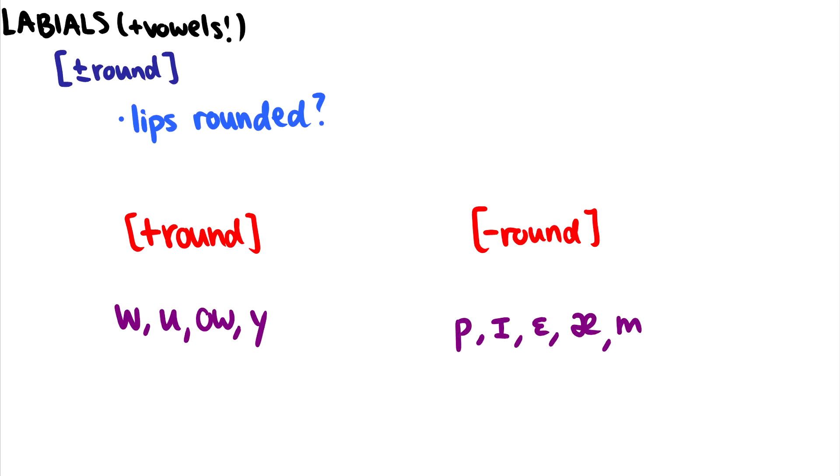Now, if we have labial sounds, then we can talk about plus and minus round. And this also applies to vowels, because we use our lips to change the shape of our vowels too, but we'll cover that more in the vowel video. So plus or minus round asks a simple question, and that is, are the lips rounded? And if the answer is yes, such as in w, o, u, this is a French vowel u, then it is round. But minus round something like p, b, m, it's not rounded here. So notice, I only talk about labial sounds and vowels.